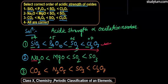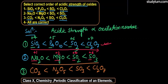Second Option भी check करते हैं। Sodium का oxidation number +1, Magnesium का +2, Sulfur का SO2 में +4, और SO3 में +6। यहाँ पर भी oxidation number increase कर रहा है, मतलब Second Option भी correct order में है।